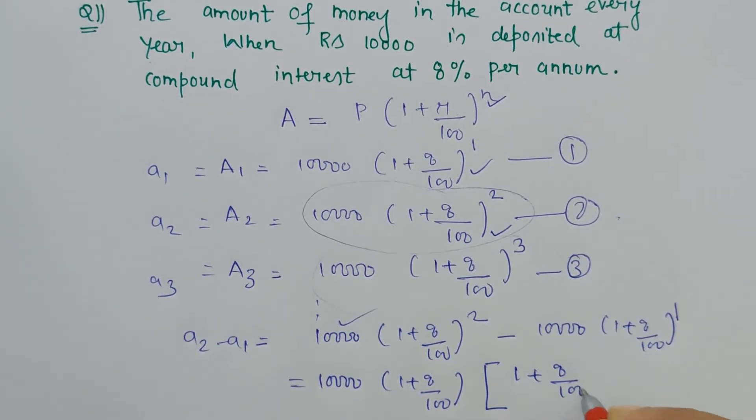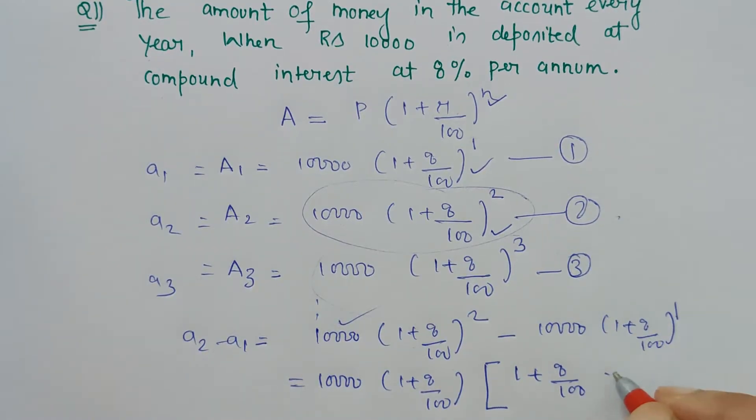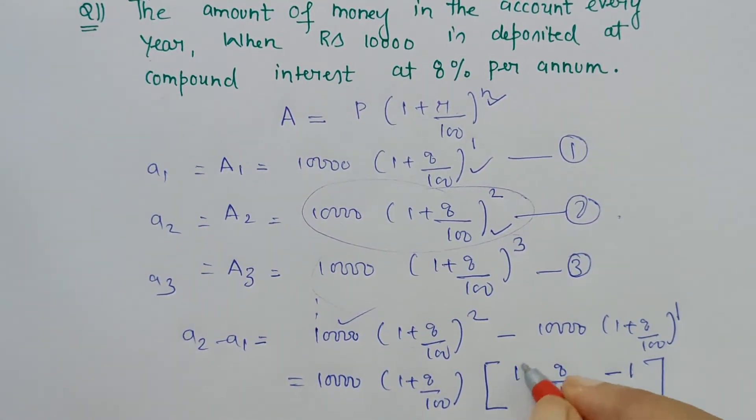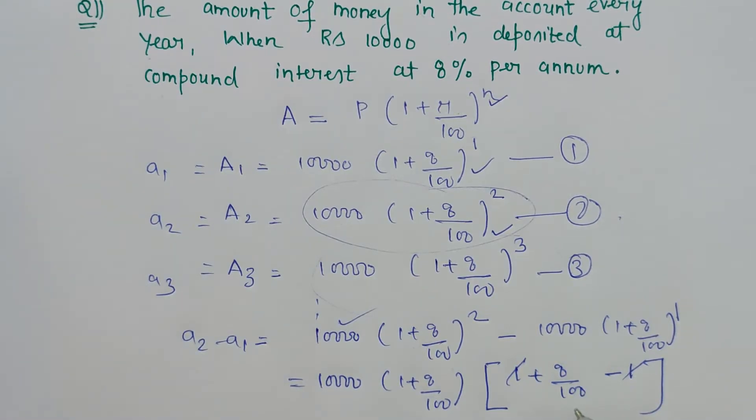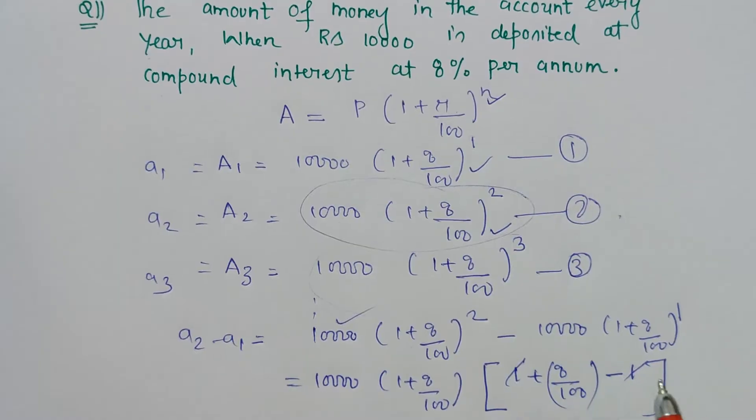So what is left? We are left with (1 + 8/100), and that's it. And here, what is left? Nothing is left, so minus 1.